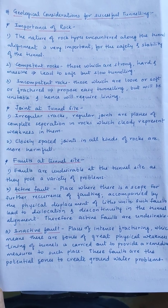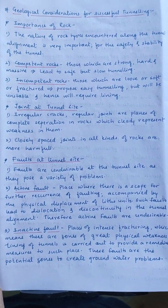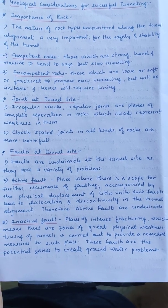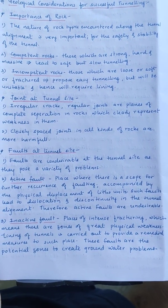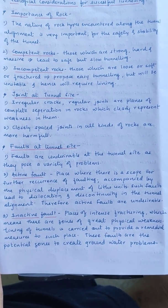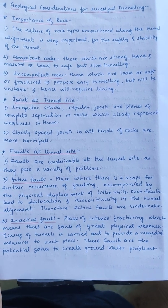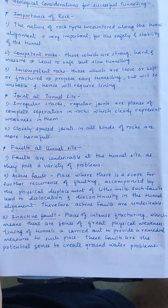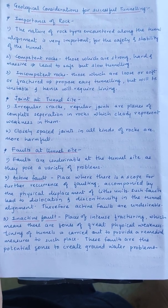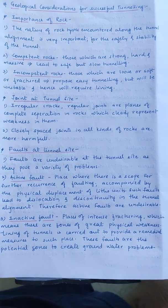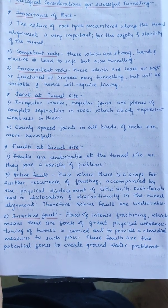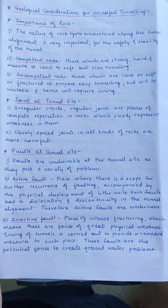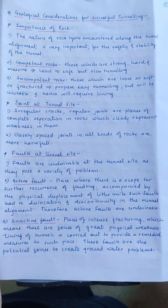As we are dealing with engineering geology, geological considerations for successful tunneling are very important. The first consideration is the importance of rock. The nature of rock types encountered along the tunnel alignment is very important for the safety and stability of the tunnel. There are two types of rocks: competent rock and incompetent rock. Competent rocks are those which can carry loads and remain stable; incompetent rocks are those which cannot. Competent rocks are strong, hard, and massive.